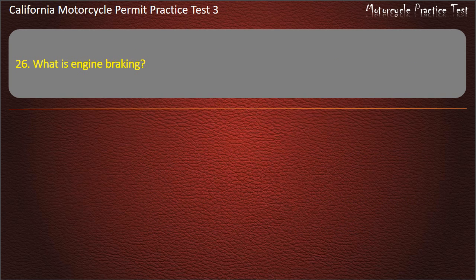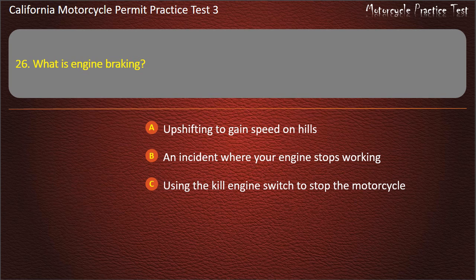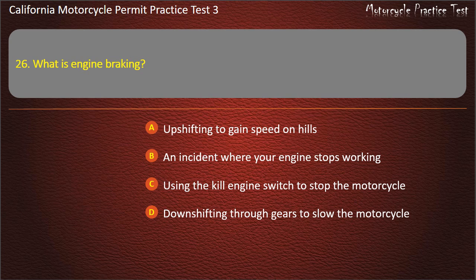Question 26. What is engine braking? Upshifting to gain speed on hills, an incident where your engine stops working, using the kill engine switch to stop the motorcycle, or downshifting through gears to slow the motorcycle. Answer: Downshifting through gears to slow the motorcycle.